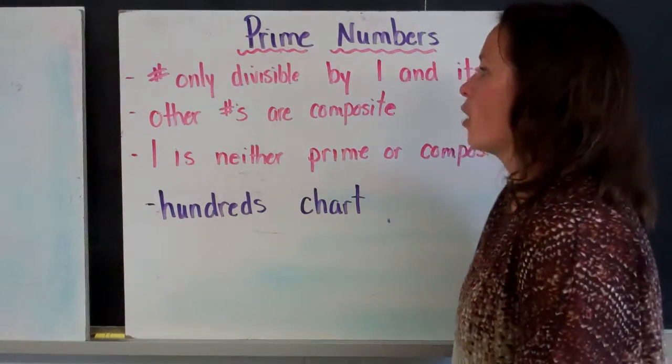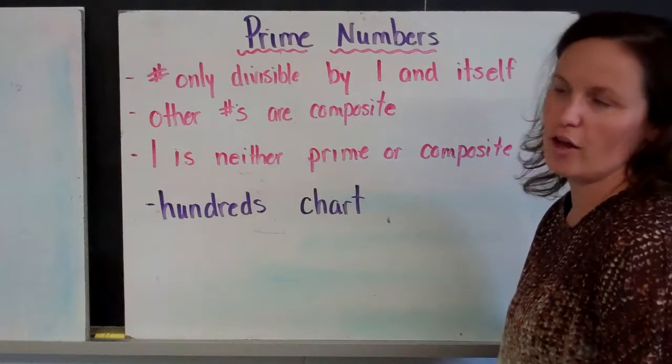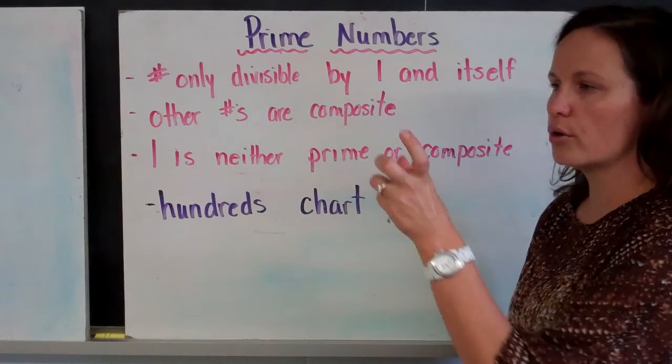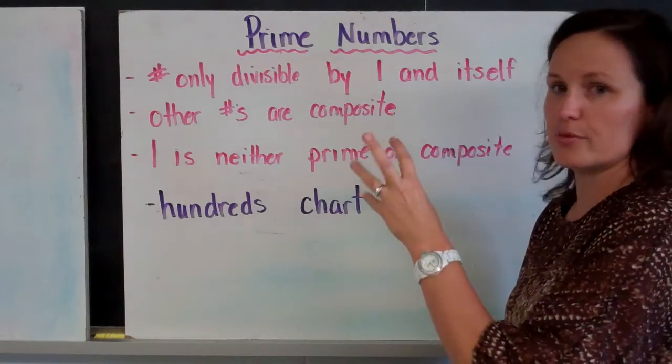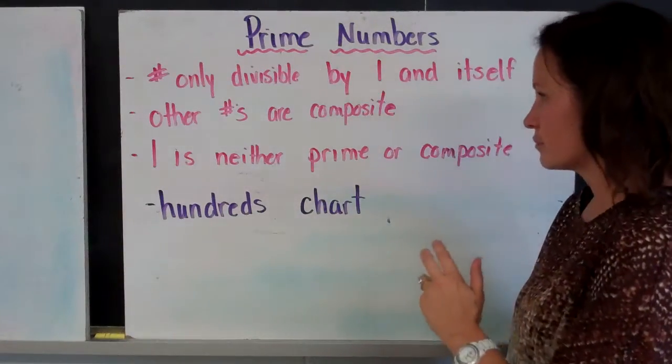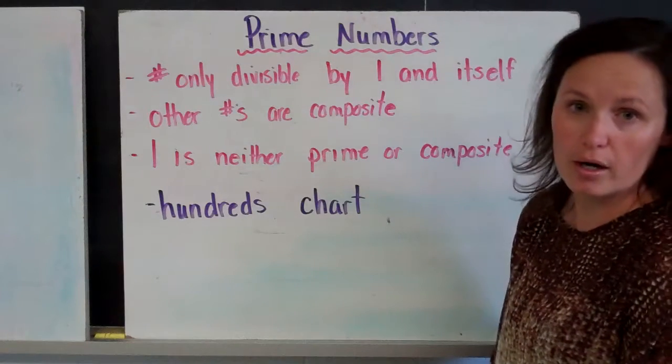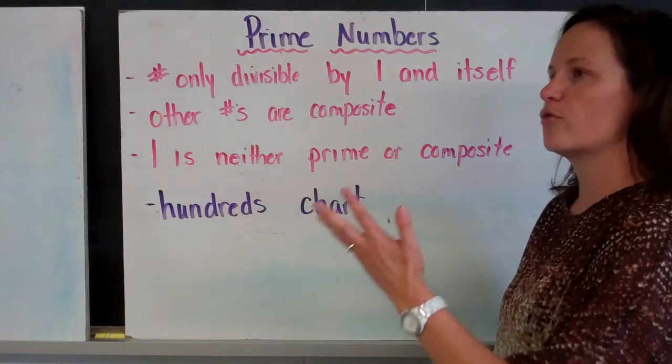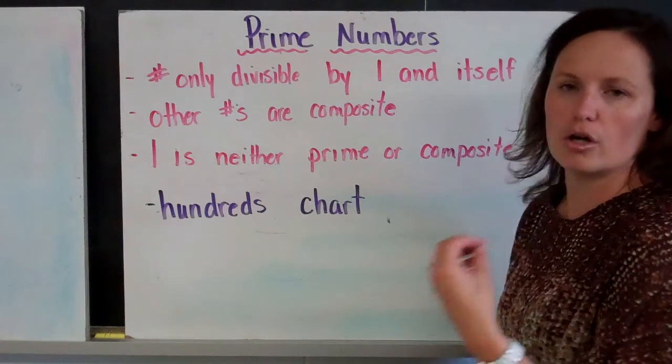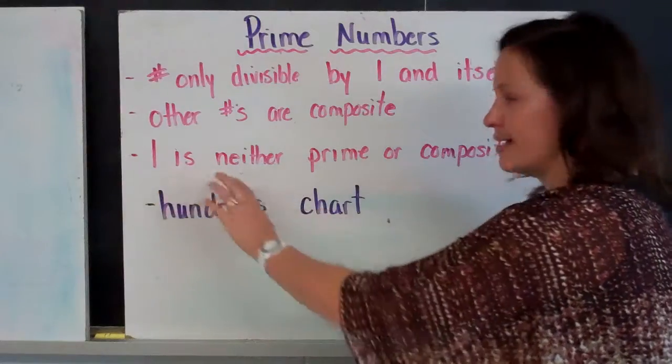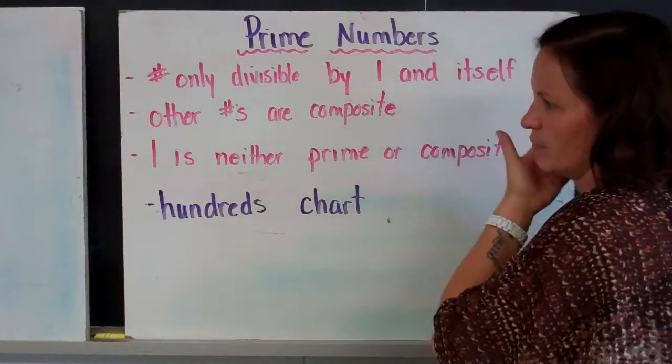Prime numbers. Prime numbers are numbers that are only divisible by 1 and itself. So for example, 3. There are no two other numbers, no two composite numbers that you could multiply together to get 3, except for 1 times 3. All the other numbers are composite numbers. So a 4, number 4, you can multiply 1 times 4 to get 4, 2 times 2 to get 4. So those are called composite numbers. Number 1 is neither prime nor composite because it doesn't satisfy this criteria.